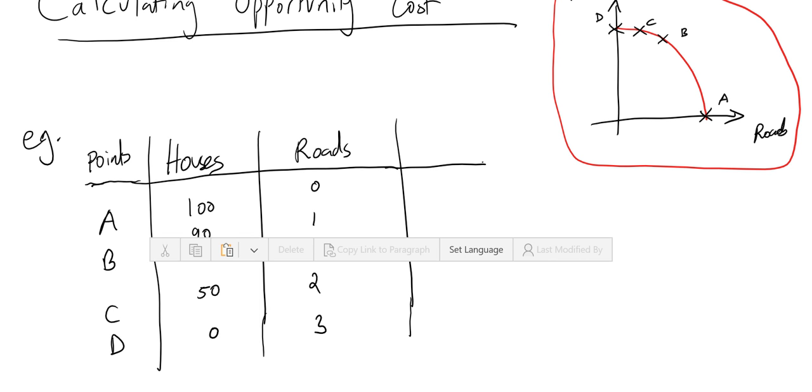To calculate the opportunity cost of producing one road, you look at the change that happens as you shift from zero road production at point A to single road production at point B.